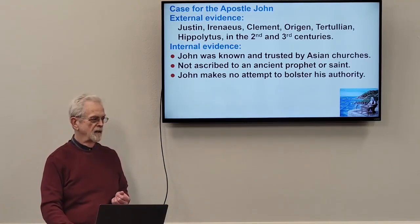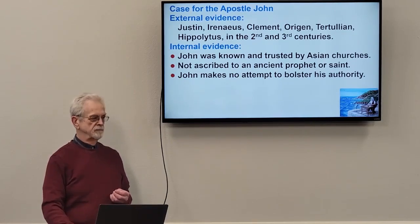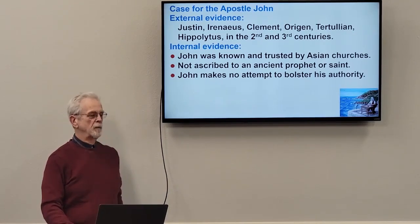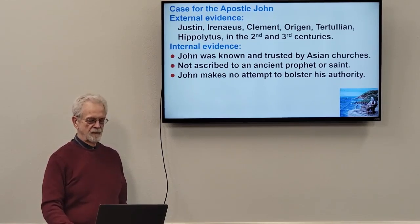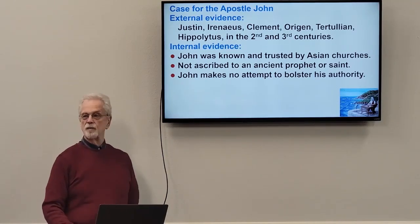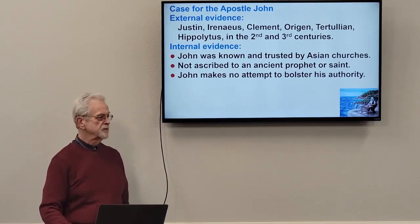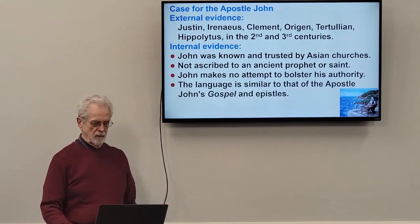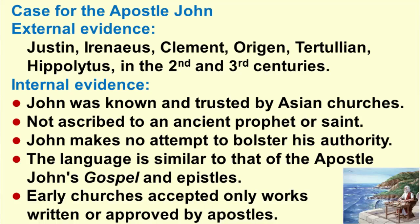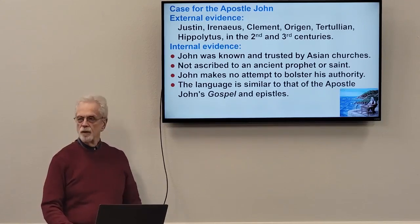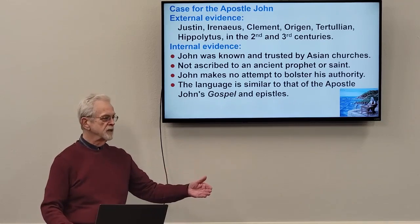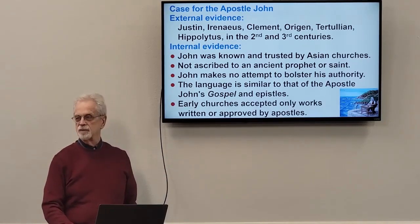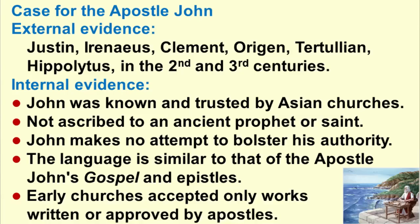As Jesus said in Matthew 24:5, people will come in his name proclaiming they are Messiah or prophets and deceive many. We're trying to ascertain whether this is one of those reliable books that came from the apostles. Others point out the language of the book is very similar to that of the Apostle John's Gospel and his epistles. There's no sound reason to doubt that the apostle John was the author. But be aware that if your children attend a state university, they will be given the other view, and some may lose their faith. Early churches accepted only works written or approved by apostles.